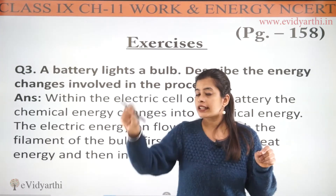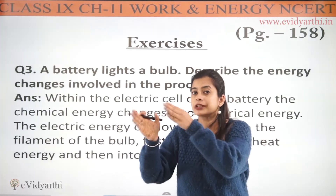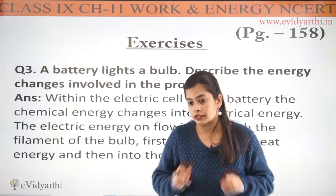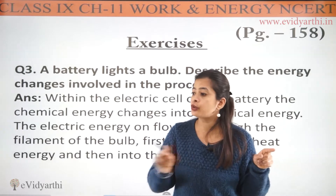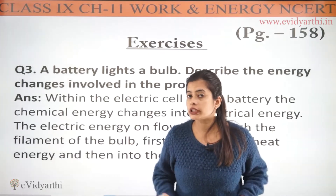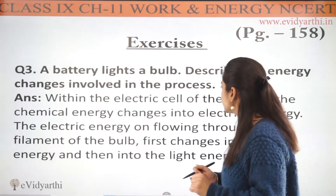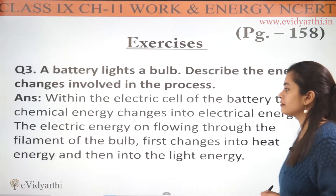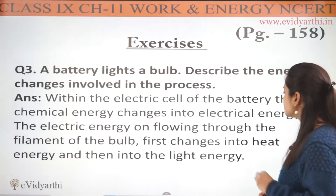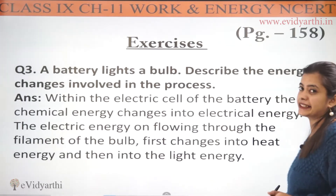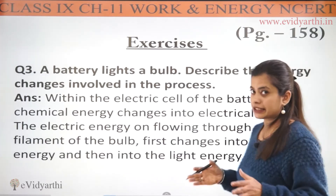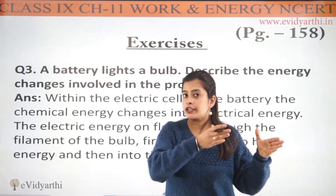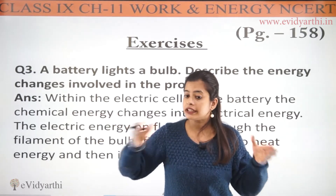Then the electrical energy is converted — the electric charges reach the bulb through the wires. On flowing through the filament of the bulb, the electrical energy first changes into heat energy and then into light energy ultimately. So what we see is that through the wires, electrical charges move in motion.